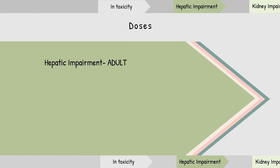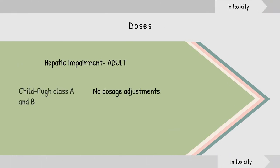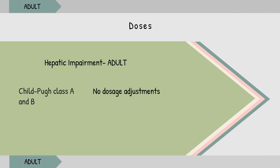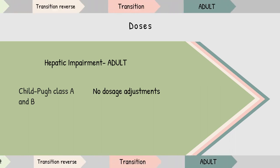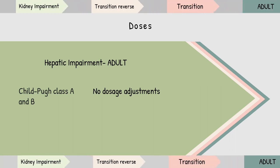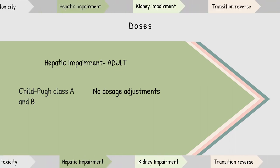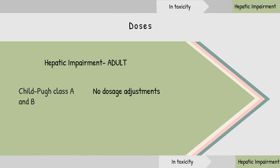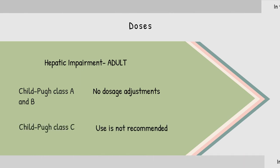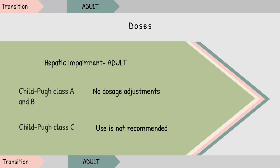In hepatic impairment, dosing is altered based on the Child-Pugh classification, a system used for assessing the prognosis of hepatic disease. If hepatic involvement is mild to moderate — Child-Pugh class A and B — no dosage adjustments are needed. In Child-Pugh class C, use is not recommended because studies have not been conducted yet.